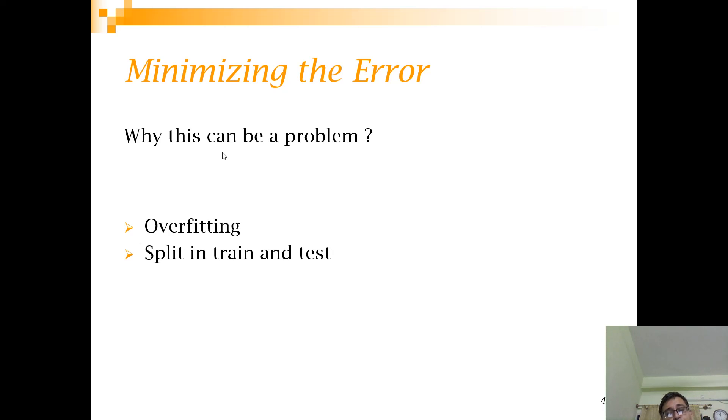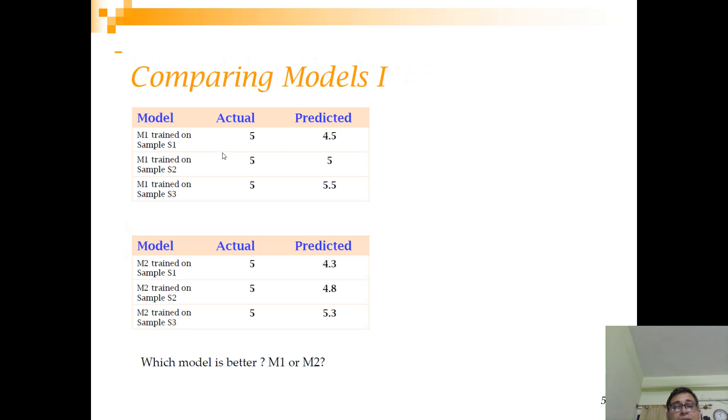So that is how you work but here a question to ponder is that if there are multiple students they will have separate training set and testing set because it is a random sample right. So now what will happen is that the model that I build on sample 1 and the model that I build on sample 2 will be different, will be a little bit different. So let us try to compare models from this perspective. So here is a scenario where we have two models M1 and M2 and there are three samples S1, S2 and S3.